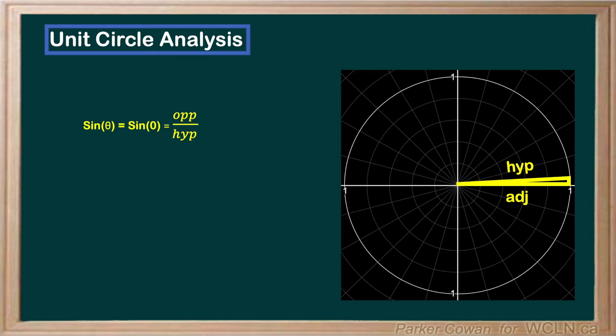Thus, for sine theta, we can say the opposite is equal to 0, and the hypotenuse is 1. This is going to give us 0 over 1, which is just 0.